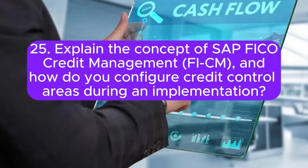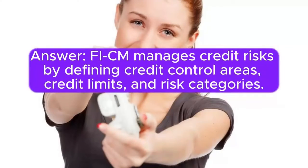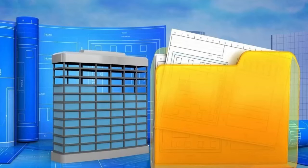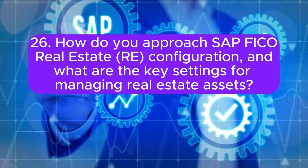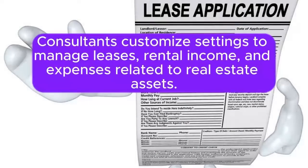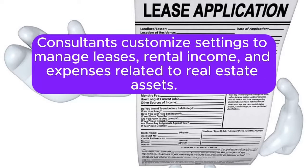Question 25: Explain the concept of SAP FICO Credit Management (FI-CM), and how do you configure credit control areas during an implementation? FI-CM manages credit risk by defining credit control areas, credit limits, and risk categories. Consultants configure credit management to align with credit policies and ensure effective credit control. Question 26: How do you approach SAP FICO Real Estate (RE) configuration, and what are the key settings for managing real estate assets? RE configuration involves defining real estate objects, contracts, and settlement rules. Consultants customize settings to manage leases, rental income, and expenses related to real estate assets.